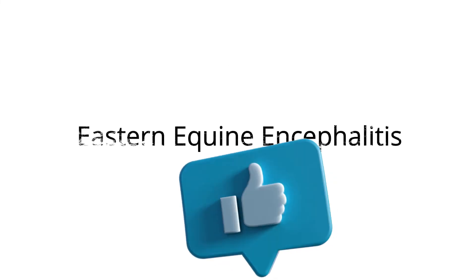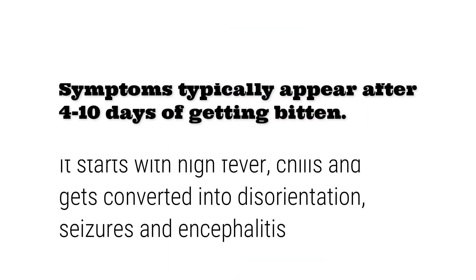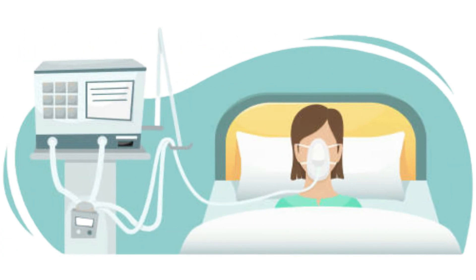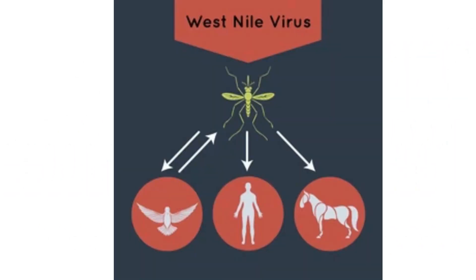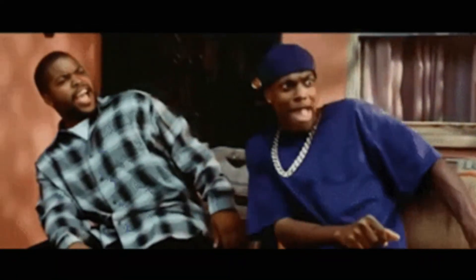This is an extremely rare kind of infection which includes inflammation of the brain. Symptoms typically appear after four to ten days of getting bitten, starting with high fever and chills, then converting into disorientation, seizures, and encephalitis. The patient must be shifted to a hospital immediately and provided respiratory support. The carrier of this virus, the female Culex mosquito, is one of the most common mosquitoes found worldwide. These mosquitoes feed on infected birds and then transmit it to humans and horses. There is no vaccination available, but you can apply mosquito repellent like Odomos on exposed skin or cover it with clothes.